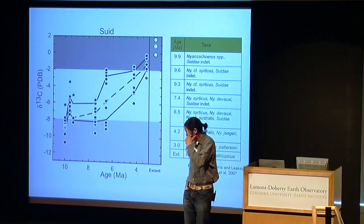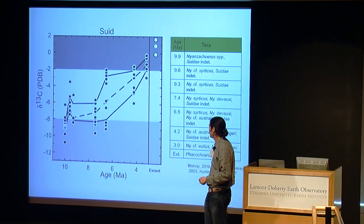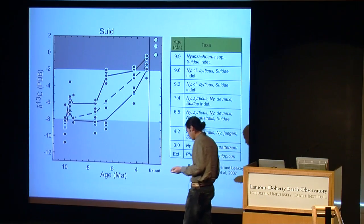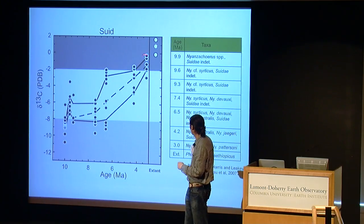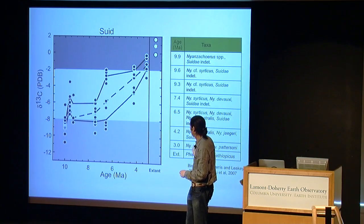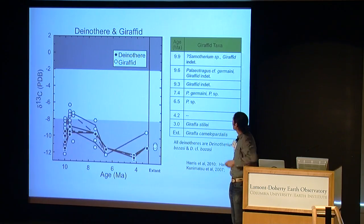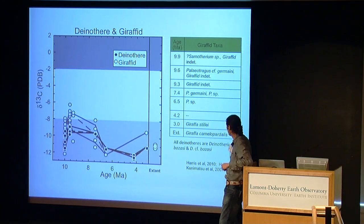The last case in detail is the suids, which have a rather delayed response — they don't actually start to have C4-dominated diets until about 6.5 million years, nearly two and a half to three million years after we see it in the equids. And they actually go all the way. These are northern Kenya suids; we know suids do a lot more things in other places. And then the giraffids and denotheres are known browsers throughout the record, mostly in C3 space throughout time.